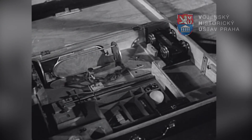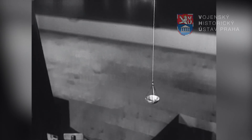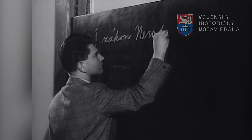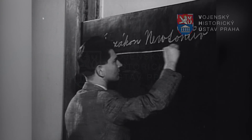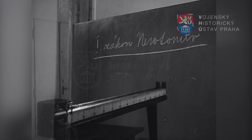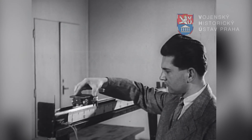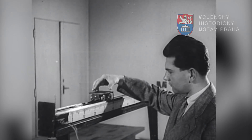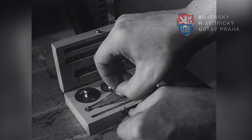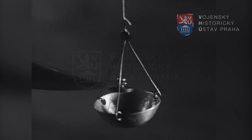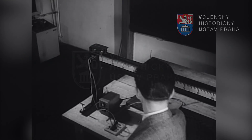V jejich vysvětlení použijeme vozíčkového padostroje, na kterém budeme demonstrovat závislost zrychlení hmoty na síle, která je způsobila. Prvním pohybovým zákonem Newtonovým je princip setrvačnosti. Všechna tělesa se snaží setrvávat v klidu nebo v rovnoměrném přímočarém pohybu, dokud nejsou nucena vnějšími silami tento svůj stav změnit. Vozíček padostroje ponechán sám o sobě setrvává v klidu. Působí-li na těleso síla, v našem případě váha závaží, vzniká pohyb rovnoměrně zrychlený.